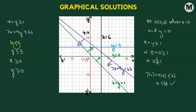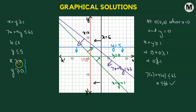For x less than or equal to 6, the line x equals to 6 divides the plane into two regions — left and right. Since x is less than or equal to 6, we consider the region to the left of x equals to 6. For y less than or equal to 5, we consider the region below y equals to 5. For x greater than or equal to 0 and y greater than or equal to 0, this simply means we are considering the first quadrant.